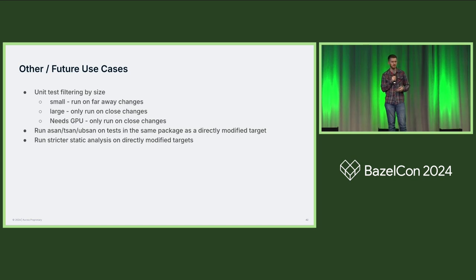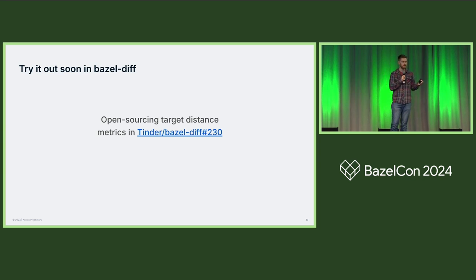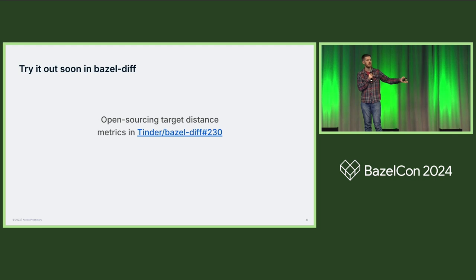You might be thinking, this all sounds great, I'd love to use it — but this is a closed-source system. I've been working on open sourcing this in BazelDiff, which seems to be the most popular of these tools. Hopefully it should be landing very soon — I just got all the tests passing yesterday. I'm really curious how you think you would use this. What would you change about your CI system if you knew exactly how far away some of your tests were from a directly changed target?